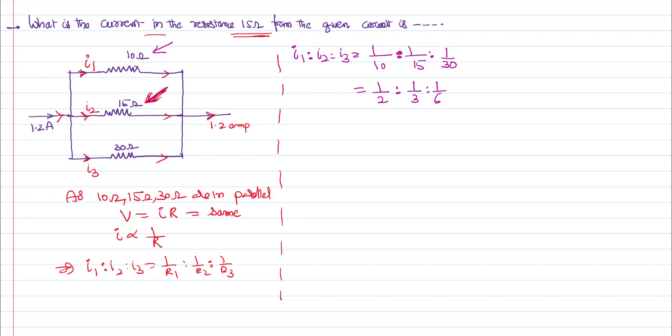That's the ratio of the currents I1 is to I2 is to I3. Means what? Out of the total current, 1 by 2 part of the total current is shared across I1. 1 by 3 is shared across I2. Out of the total current, 1 by 6 is shared across I3.